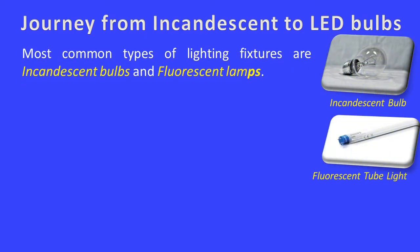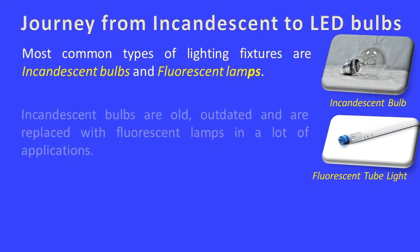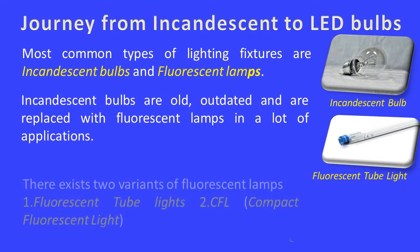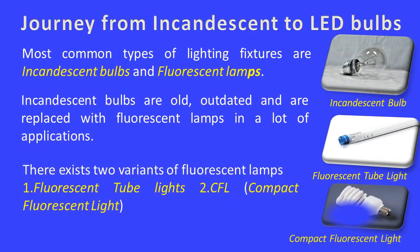The most common types of lighting fixtures are incandescent bulbs and fluorescent lamps. Incandescent bulbs are old and outdated and have been replaced with fluorescent lamps in many applications. There exist two variants of fluorescent lamps: fluorescent tube lights and CFL — compact fluorescent light.